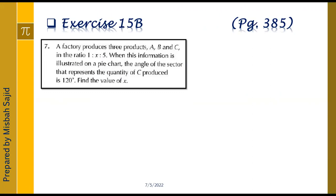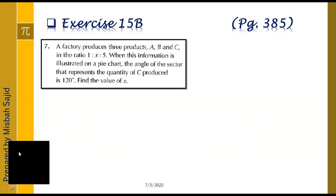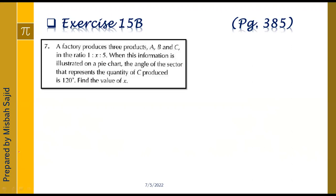Basically, it is a factory that produces 3 products named A, B, C in the ratio 1 : X : 5, meaning A's quantity is 1, B's is X, and C's is 5. The angle of the sector for C is 120 degrees, and we have to find the value of X, which is the value of B.